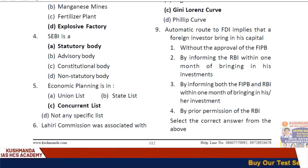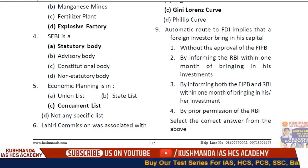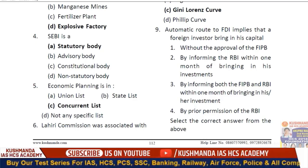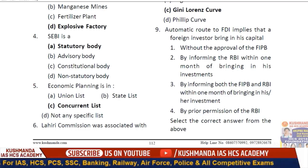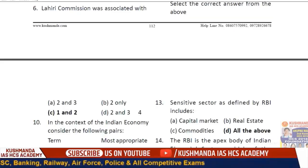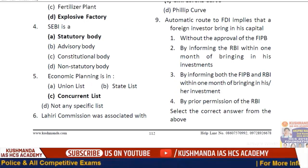Question 9: Automatic route of FDI implies that a foreign investor brings in capital. The options are: without approval of FIPB by informing RBI within one month; by informing both FIPB and RBI within one month; or by prior permission to RBI. The correct answer is option C — statements 1 and 2 are correct; 3 and 4 are wrong.